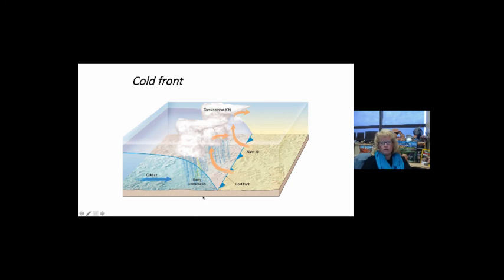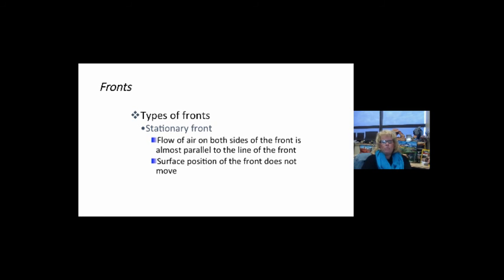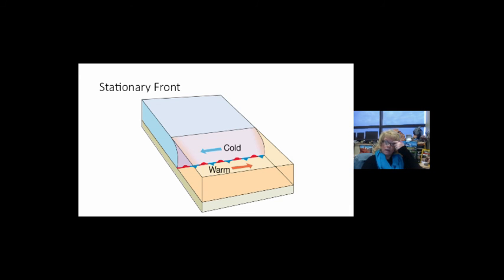Sometimes we get stationary fronts, where the flow of air on both sides of the front is almost parallel to the line of the front itself, and the surface position doesn't move, so it sits in one location. In that case, you draw your cold and warm symbols: you'll have the cold front side with the direction it's moving with triangles, and the warm front on the other side where the two meet. This tells you you've got a stationary front.